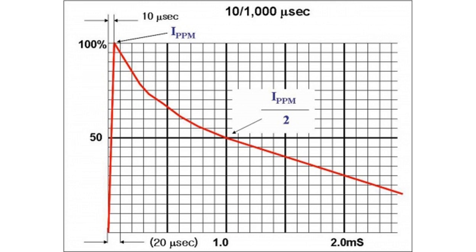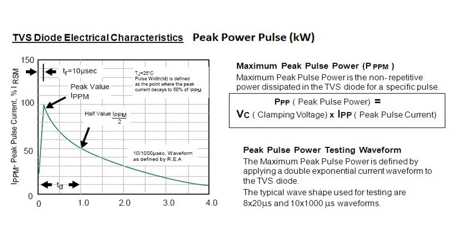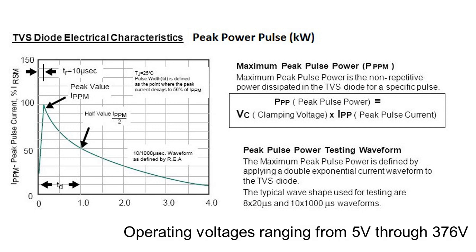Most devices are specified with a ten/one-thousand microsecond surge waveform, i.e., ten microseconds rise to peak and 1,000 microseconds exponential decay to one half peak. TVS families are normally specified in kilowatts of peak pulse power, PPP. Power rating is derived from the product of peak pulse current IPP and the clamping voltage VC. TVS diodes are available for operating voltages ranging from 5 volts through 376 volts.